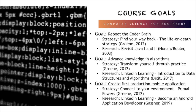The course goals for Computer Science for Engineers are: to reboot the coder brain, to advance knowledge in algorithms, and to create first production mobile applications. I'll reboot the coder brain by revisiting my Java 1 and Java 2 notes from 2003 as an early adopter of Java. Advanced knowledge in algorithms will be achieved using LinkedIn Learning's introduction to data structures and algorithms. I'll create my first production mobile application by connecting to my environment at Broadway Grand Prix, using LinkedIn Learning to become an Android application developer.